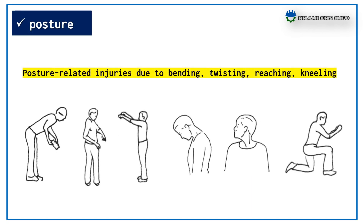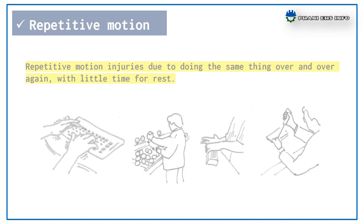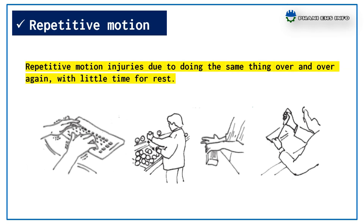Posture: injuries due to bending, twisting, reaching, and kneeling. Repetitive Motion: injuries due to doing the same thing over and over again with little time for rest.